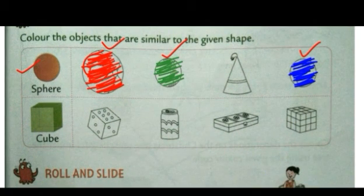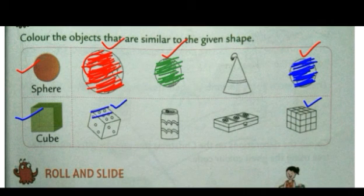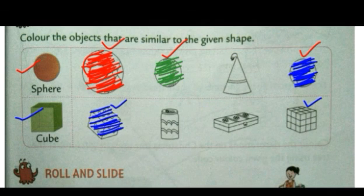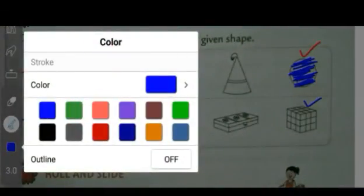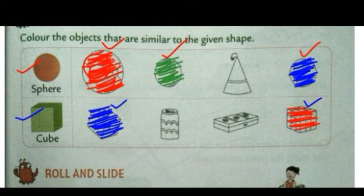Now see the next shape — it is a shape of a cube. First we will put a tick on the objects that are similar to the given shape. This one and the last one — these both are similar to the given shape. So let's color it. I am going to color the first one blue and then red in the second shape. This is the way how you color, or you can circle the objects that are similar to the given shape.